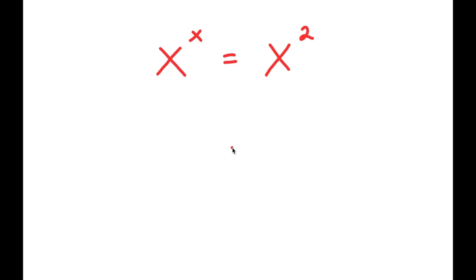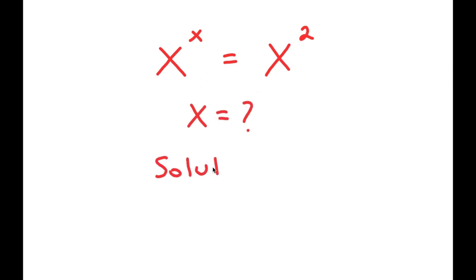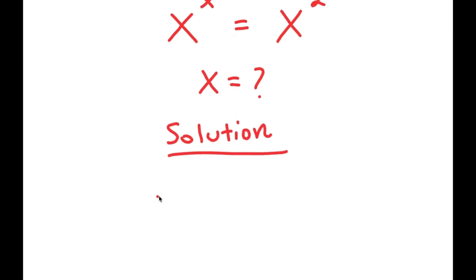So in this problem, I have x to the power of x is equal to x to the power of 2. I want to find the value of x here. For my solution, I'm going to first start by rewriting my equation: x to the power of x equals x to the power of 2.